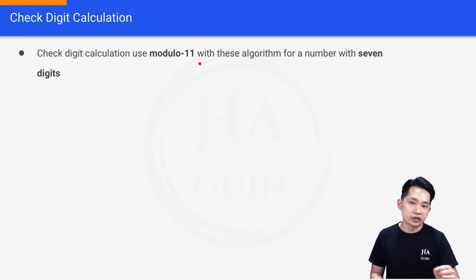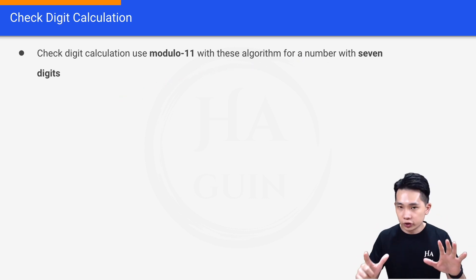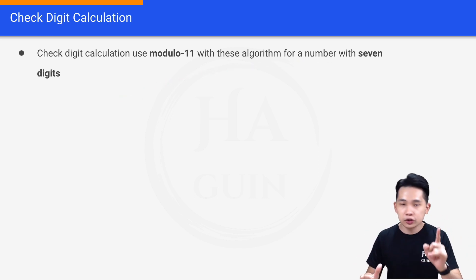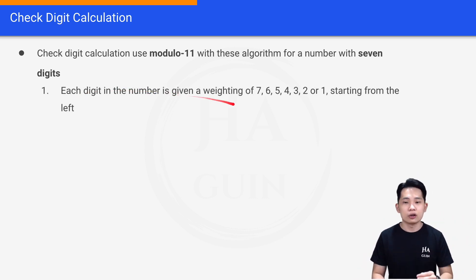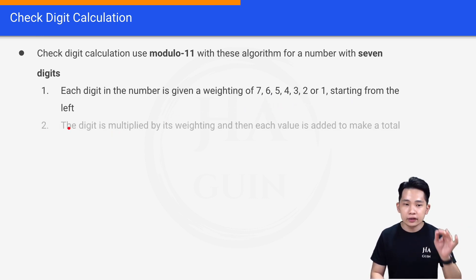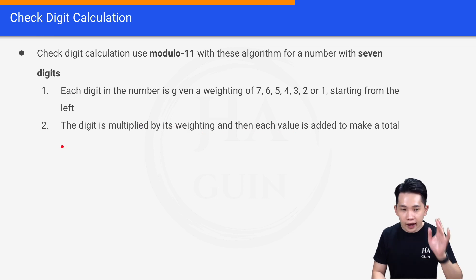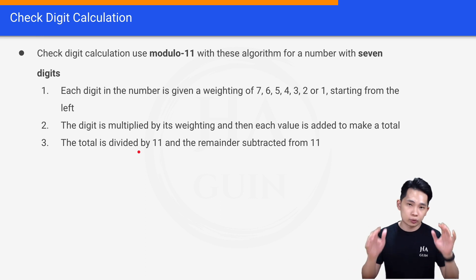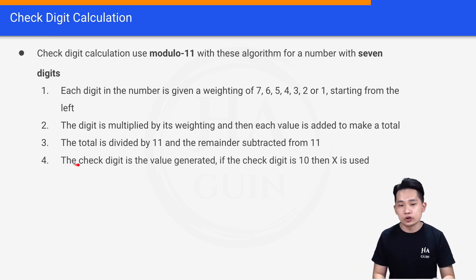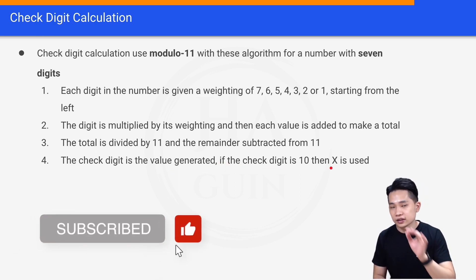Now let's look at an example of check digit calculation using modulo 11. For a number with seven digits, we compute a single check digit. First, each digit is given a weighting of seven, six, five, four, three, two, one starting from the left. The digit is then multiplied by its weighting, and each product is added to make a total. The total is divided by 11, and the remainder is subtracted from 11.